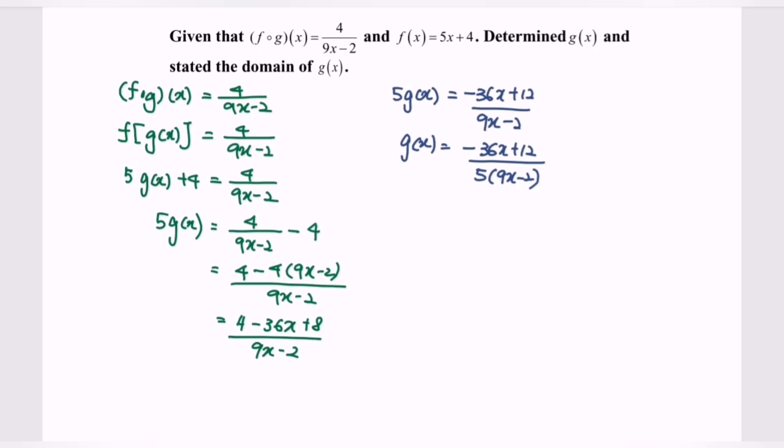Now we state the domain of g(x). The numerator is a linear function. So the domain for -36x + 12 is negative infinity to infinity. Next, for the denominator, 9x - 2 cannot be equal to 0, so x cannot be equal to 2/9.